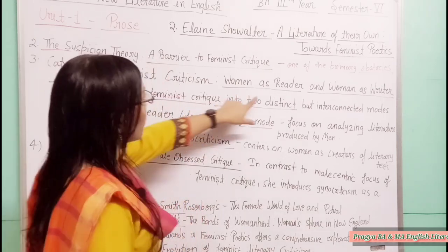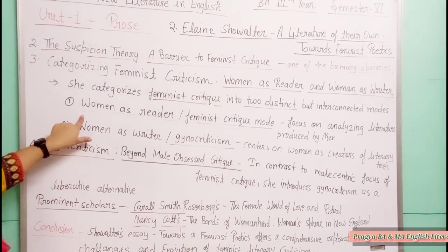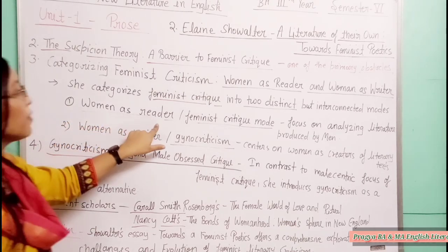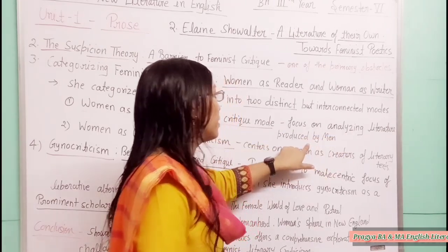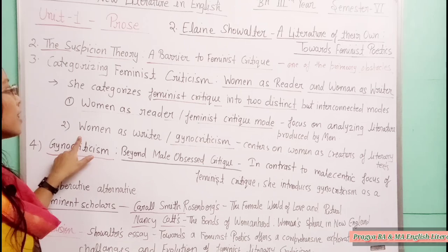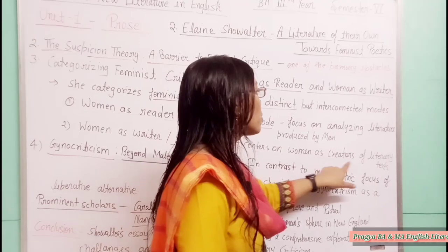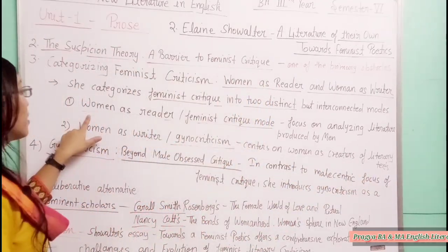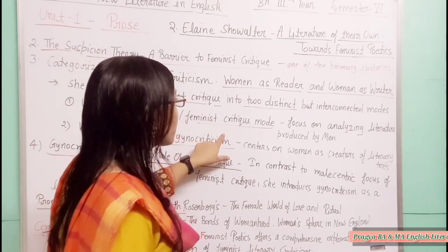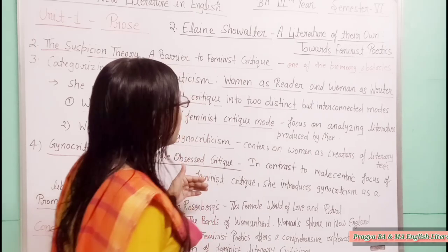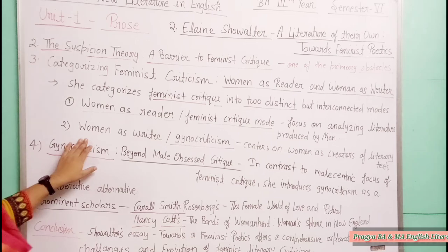The first mode — women as reader, or feminist critic mode — focuses on analyzing literature produced by men, operating within a male-dominated framework. The second mode — women as writer, also called gynocriticism — centers on women as creators of literary texts.